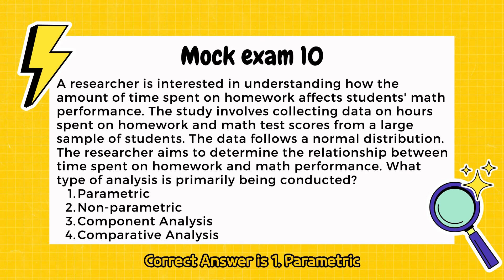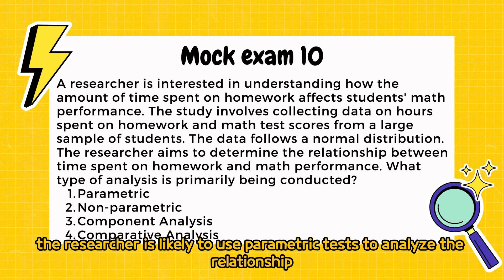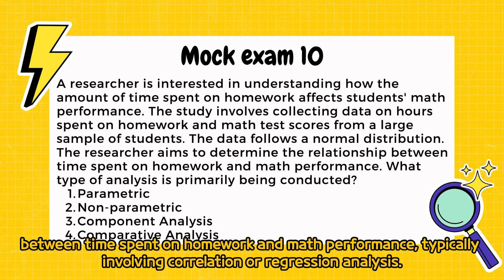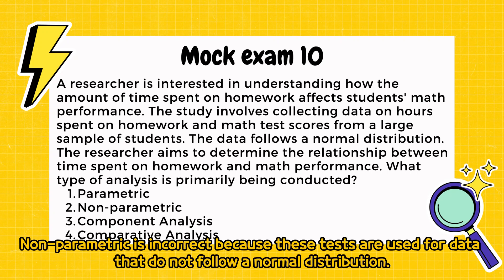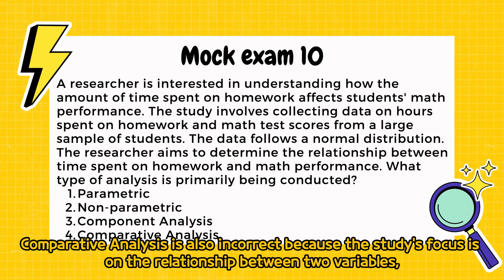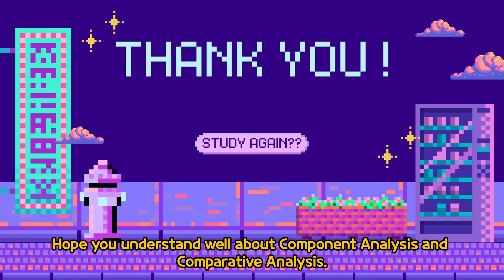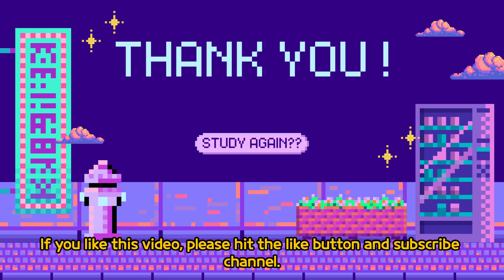Correct answer is 1: Parametric. Given that the data follows a normal distribution, the researcher is likely to use parametric tests to analyze the relationship between time spent on homework and math performance, typically involving correlation or regression analysis. Non-parametric is incorrect because those tests are used for data that do not follow a normal distribution. Component analysis is incorrect as the study does not dissect an intervention into its elements. Comparative analysis is also incorrect because the study's focus is on the relationship between two variables, not on comparing different groups or interventions. That's all for today — hope you understand well about component analysis and comparative analysis. If you like this video, please hit the like button and subscribe. Thanks for watching.